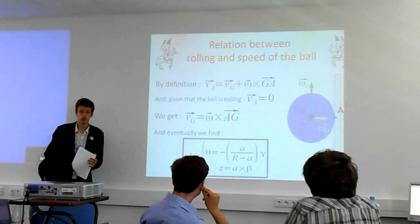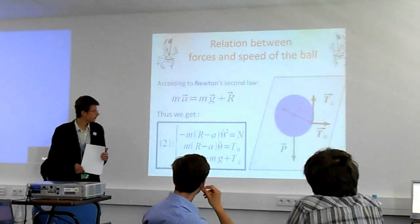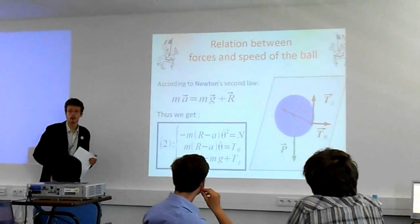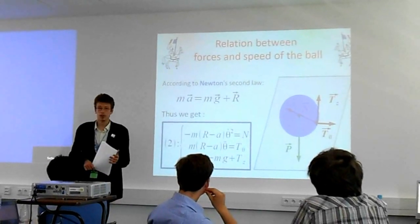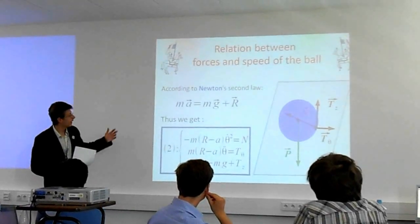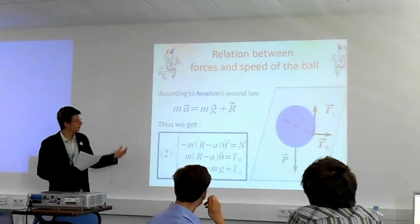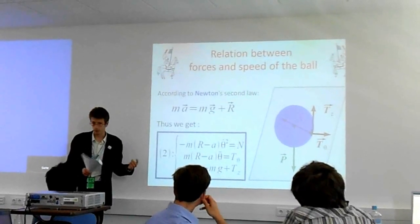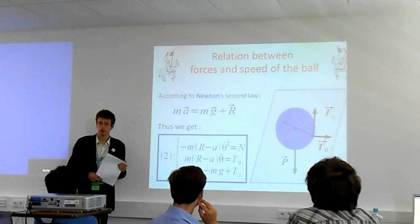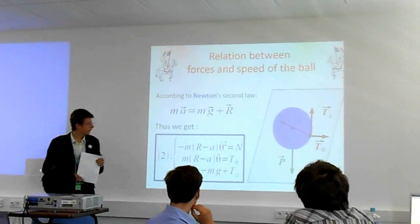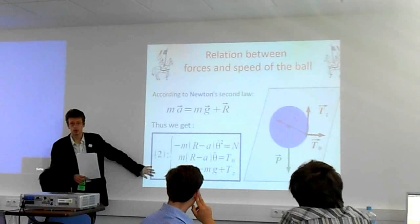But this is not sufficient, so we're going to have to put in some more elements. We're now going to try to relate the forces and the speed of the ball. With Newton's second law we have this, as the only forces applied are the weight and the reaction. We assume we neglect the friction with air. After calculations once more, we get set of equations number two.